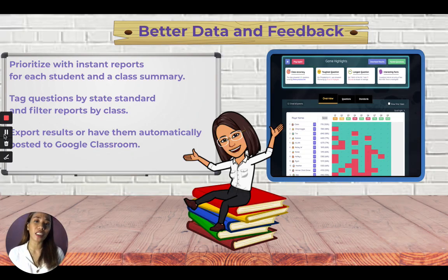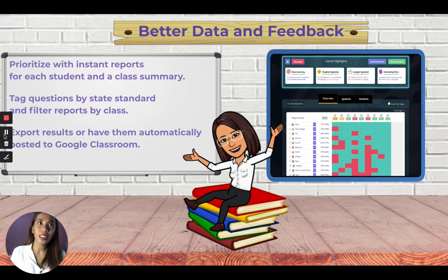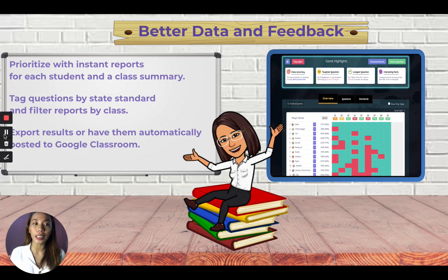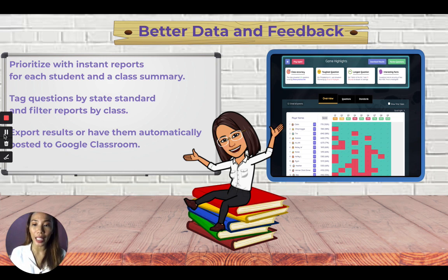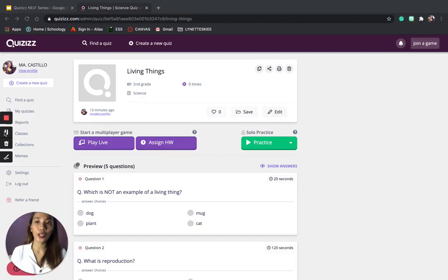Quizzes also gives us better data and feedback because it prioritizes instant reports for each student and a class summary. Quizzes provides very detailed feedback, as I've shown earlier. You can already assess the standing of the whole class — for example, which specific topic they are having a hard time with — and also track each student individually. To get feedback, go back to the Quizzes website and click Reports on the left side.